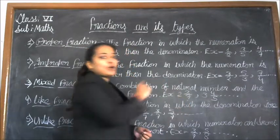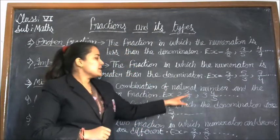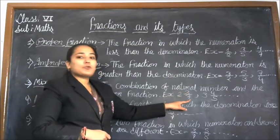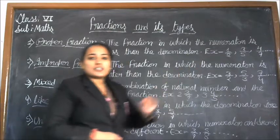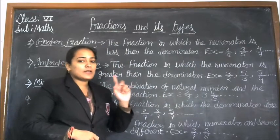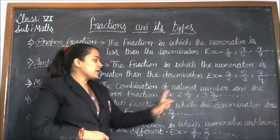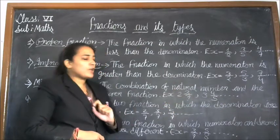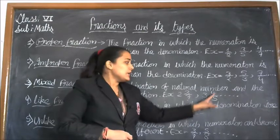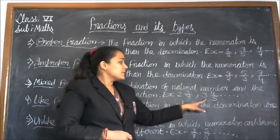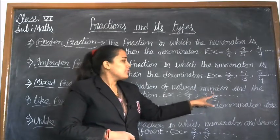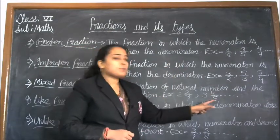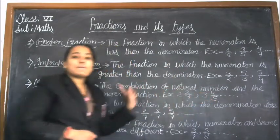For example, 2 and 3 upon 7: here 2 is the natural number and 3 upon 7 is the proper fraction — because the numerator 3 is less than the denominator 7. Therefore, 2 and 3 upon 7 is a mixed fraction. Similarly, 3 and 4 upon 7: 3 is the natural number and 4 upon 7 is the proper fraction, so 3 and 4 upon 7 is also a mixed fraction.